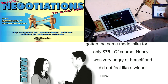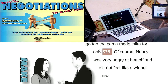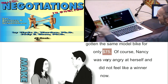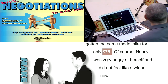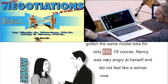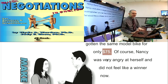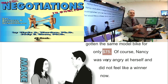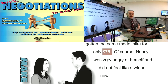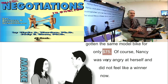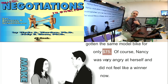And then her friend Ted tells Nancy: you know what, I bought that same bike, that same model, for $75. And Nancy's like, what? I paid $100 and you got it for $75? I must be a loser. So wait a second — Nancy just had a moment where she was a winner, and now she's a loser. That seems really odd. How is that possible? She still has the same bicycle. She's going to use the bicycle for the same things. Nothing changed.